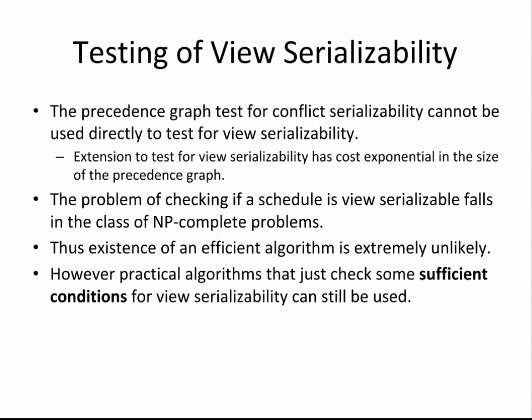For view serializability, we generally have three conditions. First, the same transaction must perform the initial read for a particular data item in both schedules. Second, the final write of the same data item should be done by the same transaction in both schedules. Third, the order in which a read is performed after a write of a transaction should be the same in both schedules. Only then can we say the two schedules are view equivalent, and if one of them is a serial schedule, the other is view serializable.